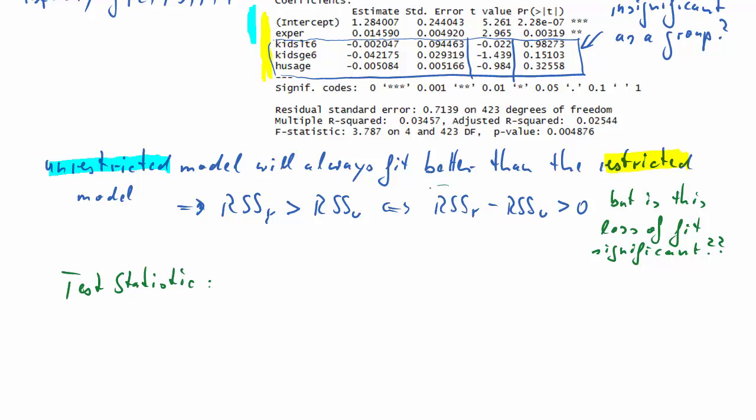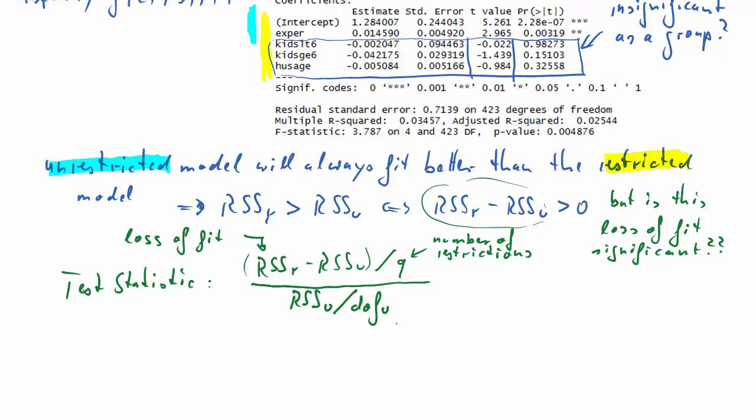But the question is, is that loss of fit significant? We know it will always be a loss, but is it significant? So what we need as an econometrician is a test statistic, and the test statistic will have this quantity at the core. So let's write it down: RSSR minus RSSU, this is the loss of fit. We will standardize that by dividing by Q. Now what is Q? Q is the number of restrictions we impose. In our case, this is 3. We're setting 3 coefficients to 0. So what we have here in the numerator is the loss of fit per imposed restriction. And then in the denominator, we have the residual sum of squares of the unrestricted model divided by the degrees of freedom for the unrestricted model.